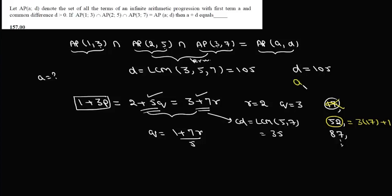So the value of A is 52. We have A and D, and we need to find A plus D. So A plus D equals 52 plus 105, which equals 157. That is the answer to this question.